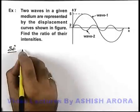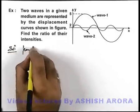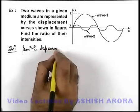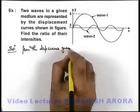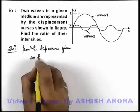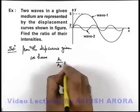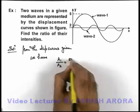Here we can see from the displacement curves given, we have the amplitude of wave 1 by amplitude of wave 2. If we find out the ratio this is 5 by 2.